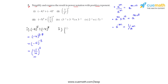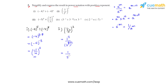The second bit says 1 over 2 raised to 3, whole raised to 2. The outer power gets individually applied to the numerator and to the denominator, giving us 1 raised to 2 divided by 2 raised to 3, whole raised to 2. Here, 2 raised to 3 is again raised to the power 2, so the powers get multiplied, giving us 1 over 2 raised to 6.